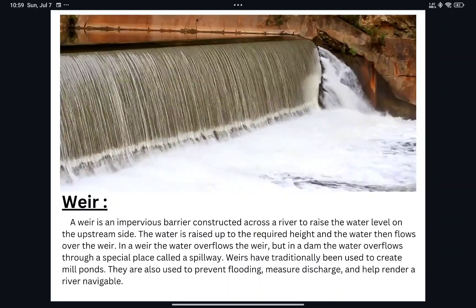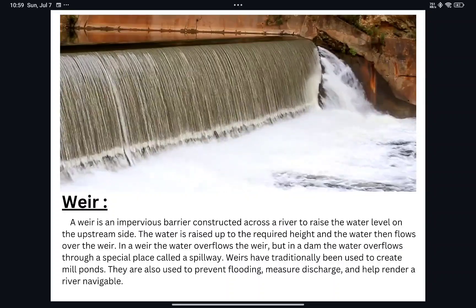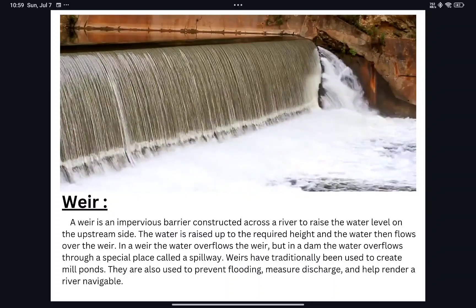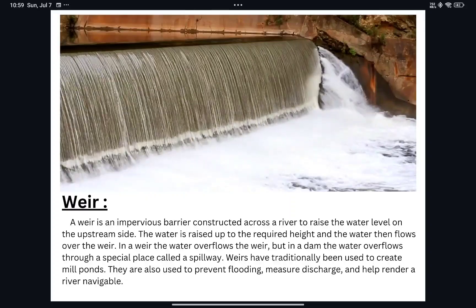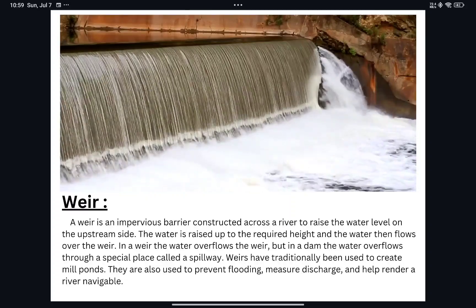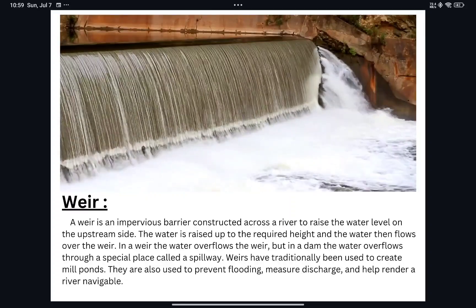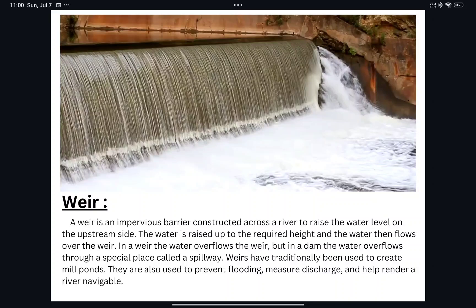A weir is an impermeable barrier constructed across a river to raise the water level on the upstream side. The water is raised up to the required height and then flows over the weir. In a weir, water overflows the structure itself, but in a dam, the water overflows through a special place called a spillway.